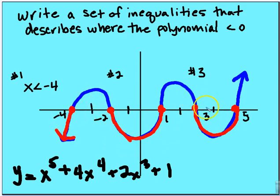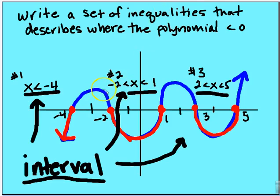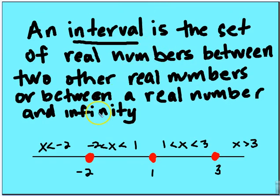We've graphed this function. We've identified where the x-intercepts are, and we've identified where the graph is below the x-axis — where y is less than zero — in red. Now we want to define specifically those intervals where the polynomial is less than zero. We're going to write a set of inequalities describing where the polynomial is less than zero: x is less than negative 4, x is between negative 2 and 1, and x is between 2 and 5. Those are the solutions to the inequality.